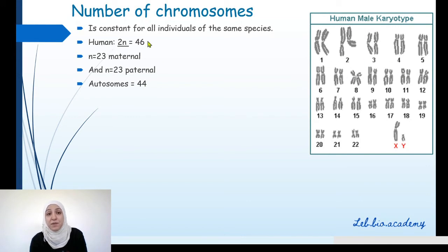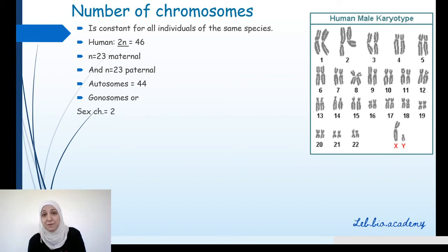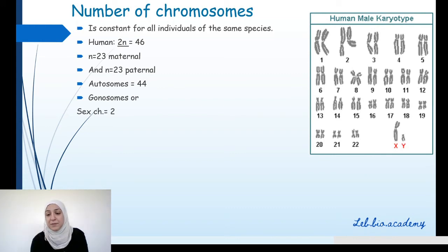From the 46 chromosomes, the first 44 are called autosomes. However, the last 2 are called gonosomes, or sex chromosomes. These gonosomes are XX in the female and XY in the male.